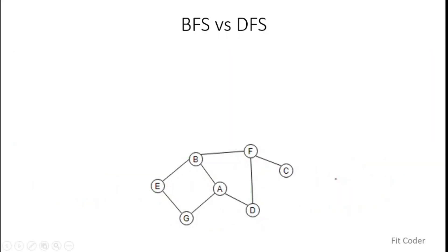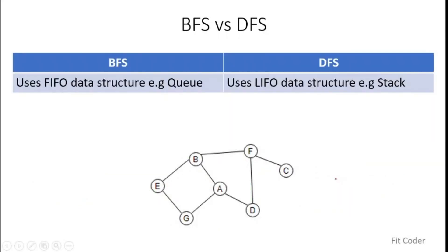The second difference between BFS and DFS is in their data structures. For implementing BFS, we use a queue, and for implementing DFS, we use a stack.